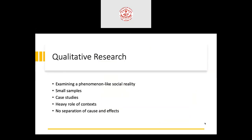Qualitative research is different from quantitative research. It examines phenomena like social reality. Compared to quantitative research, qualitative research uses smaller samples. Case study is the primary method, and contextualization is important — different contexts may yield different results. There is no separation of cause and effect in qualitative research, unlike quantitative research.